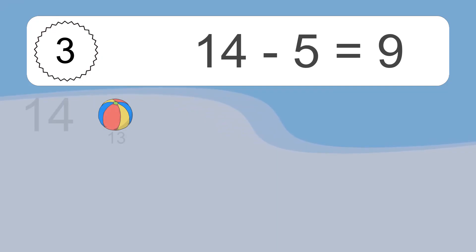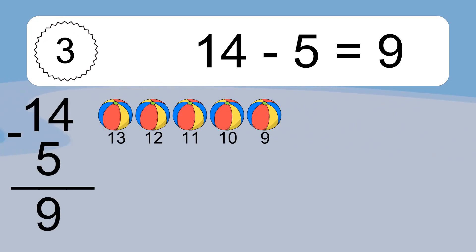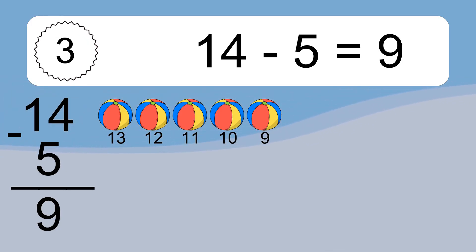14 minus 5 equals what? 14 minus 5 equals 9. Let's count it: 13, 12, 11, 10, 9.